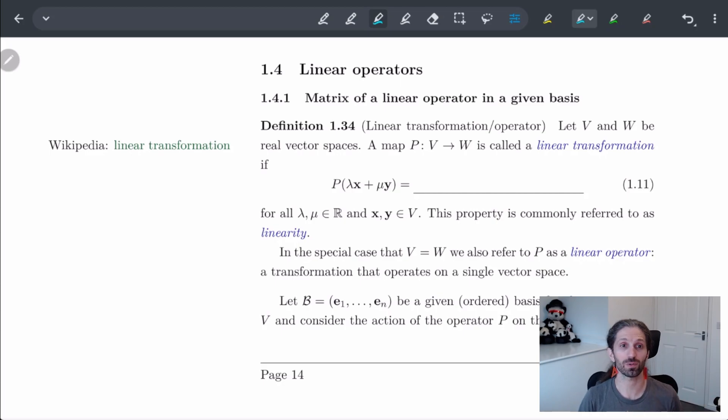So what this is basically is we're going to start off with some map P, which goes from one vector space V to another vector space W. And we're going to call this a linear transformation if we have a certain condition. Transformation means we're transforming from one vector space to another. But what does linear mean?